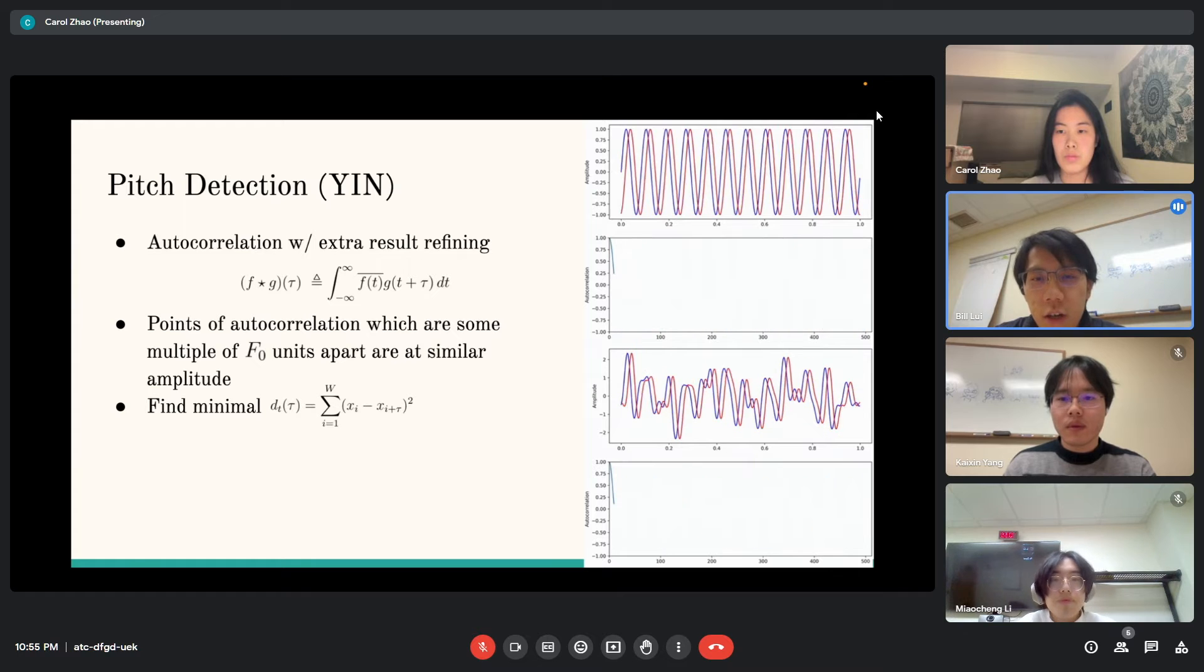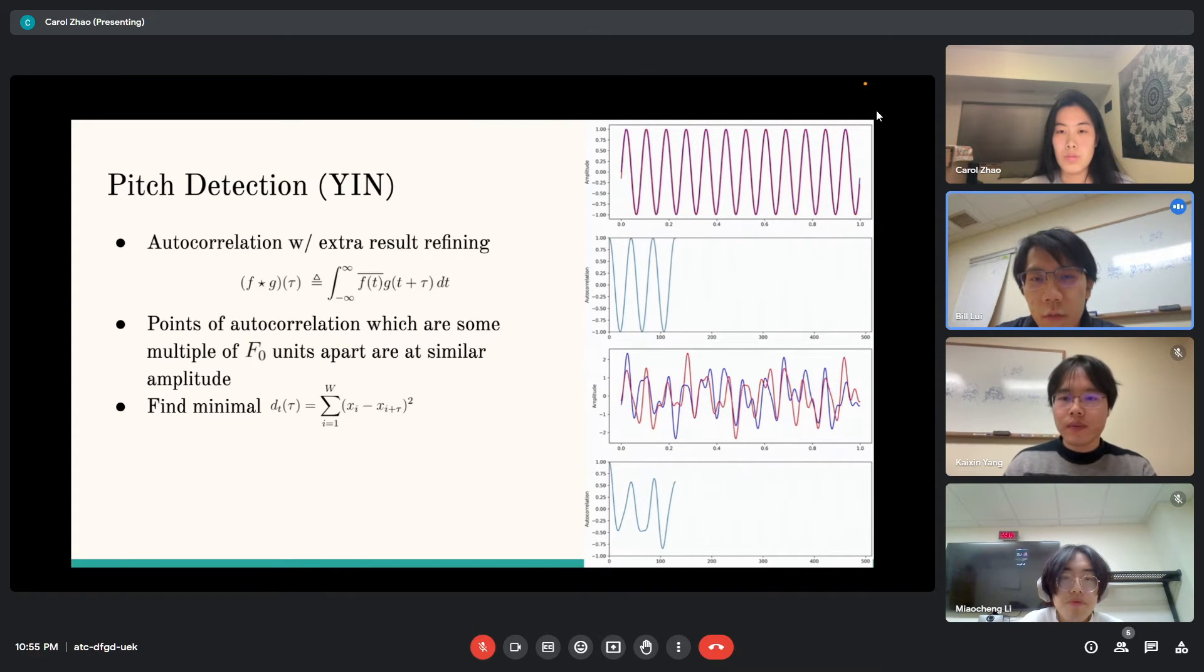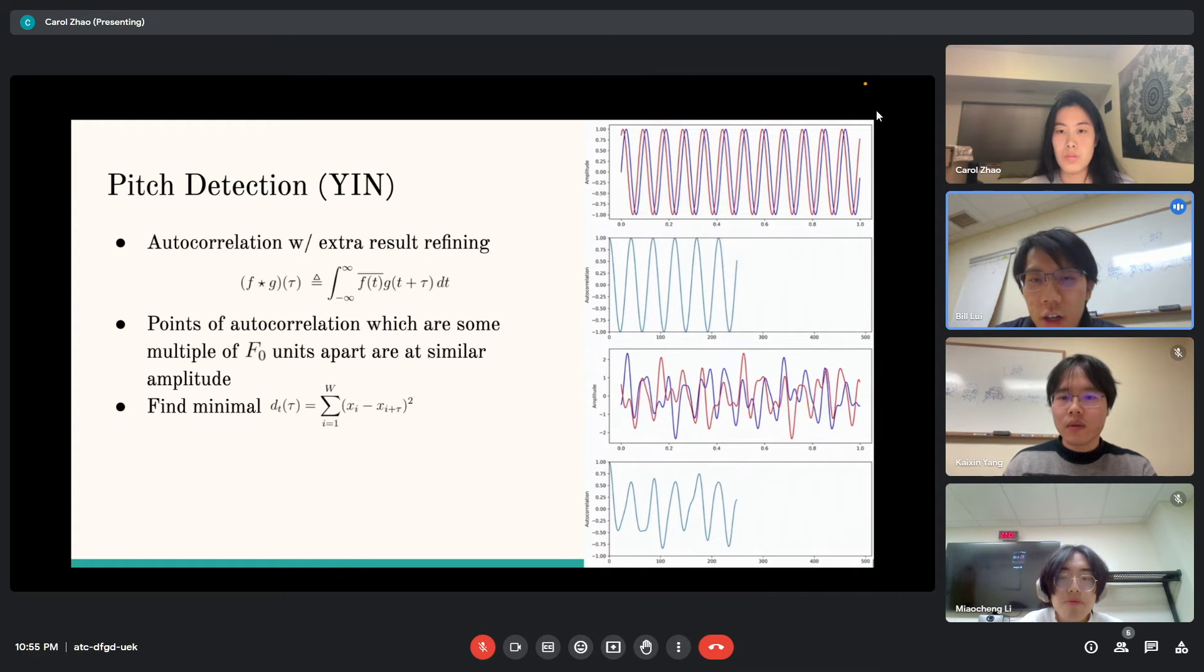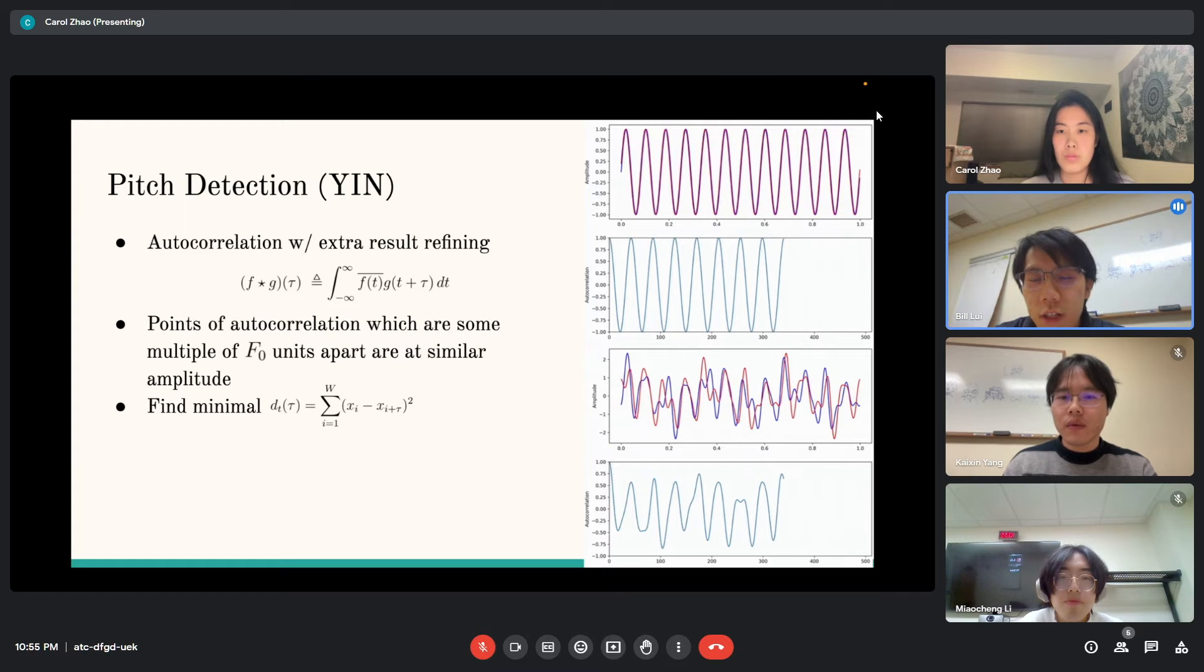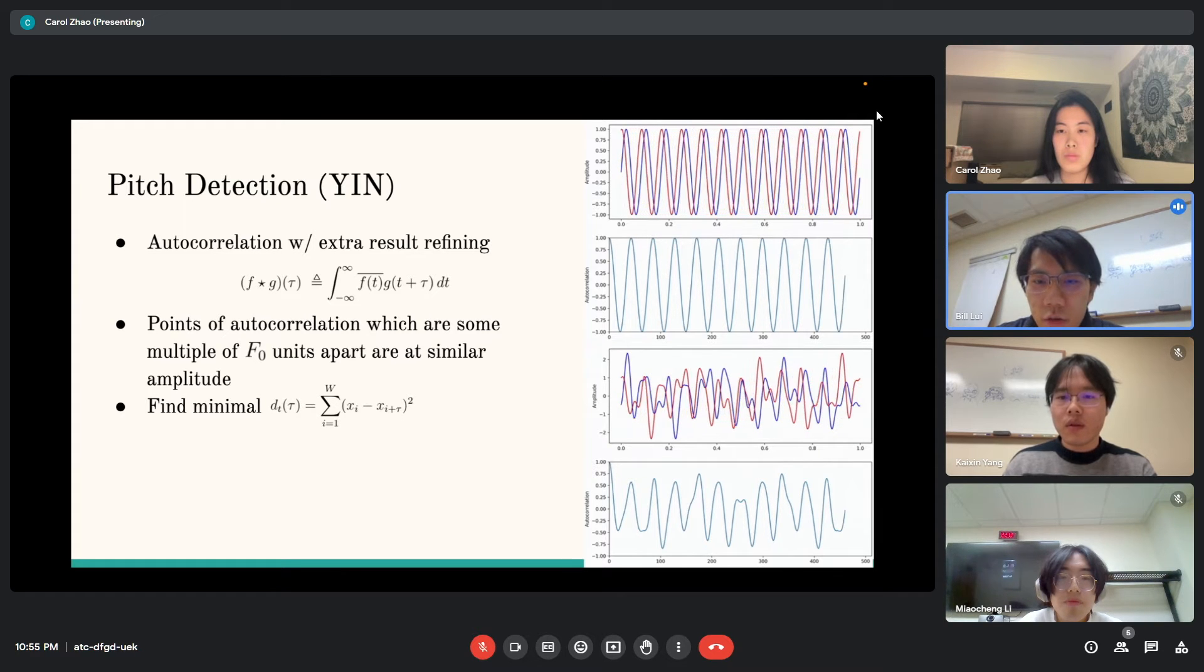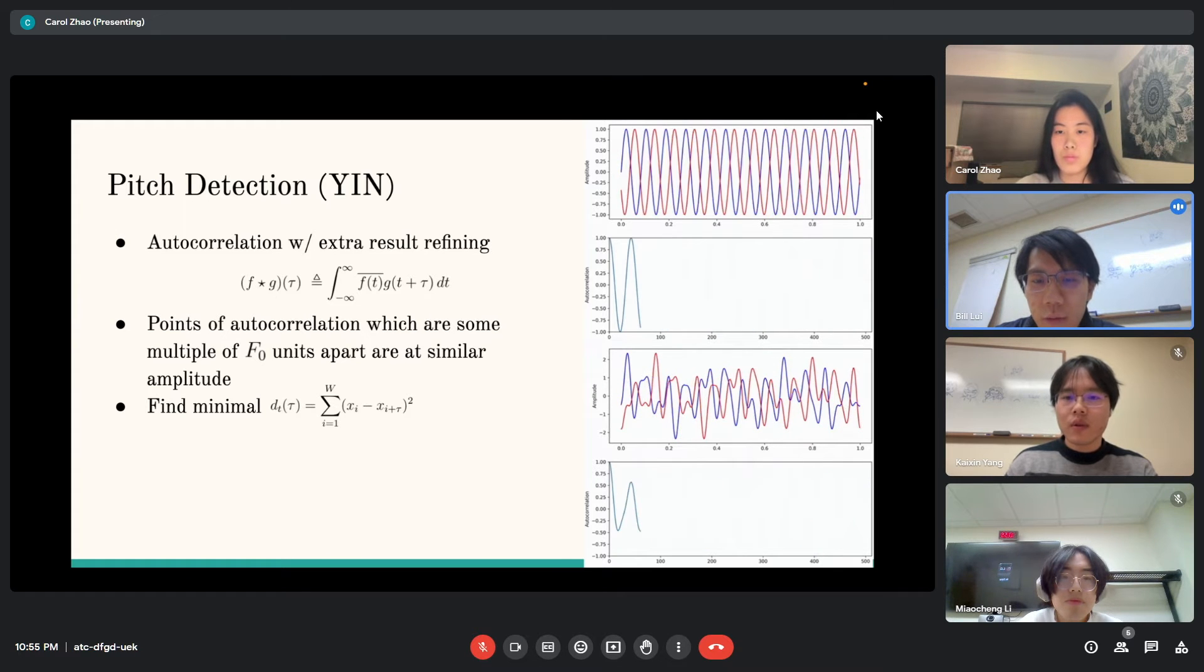If you take a look at the diagram on the right, you can see that the autocorrelation is able to capture the constructive interference behavior of the repeating signal. The peaks and troughs of autocorrelation occur at the same periodicity as the fundamental frequency of the signal. The bottom diagram shows that even if we add a bunch of noise to the signal, the autocorrelation is still able to roughly capture the same periodicity of the fundamental frequency.